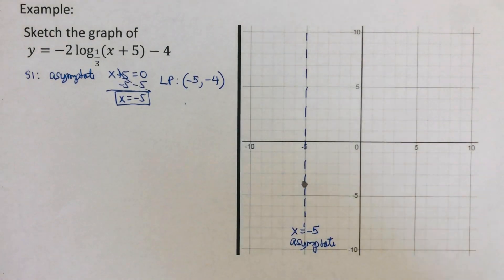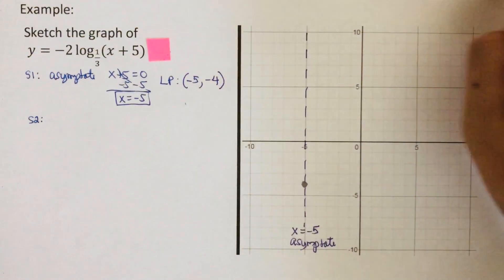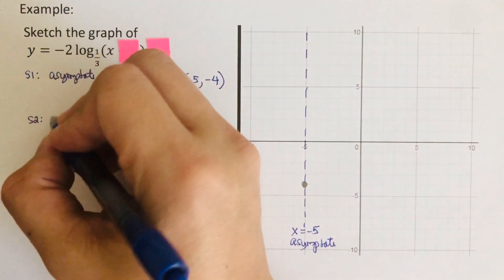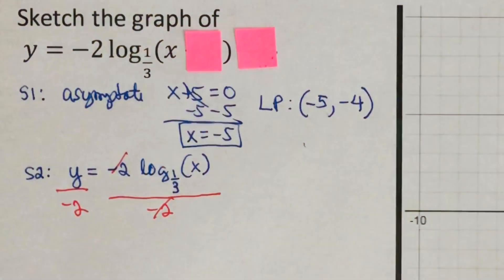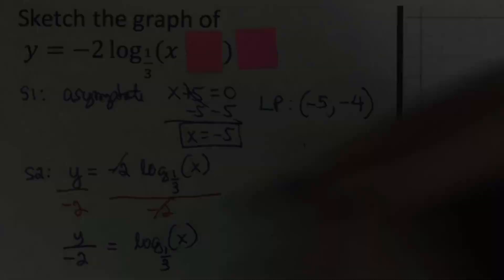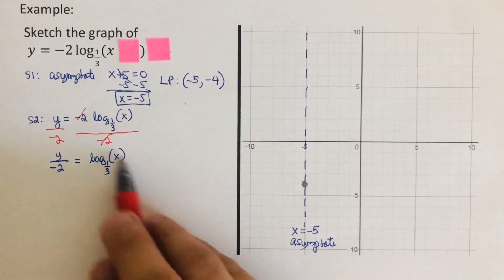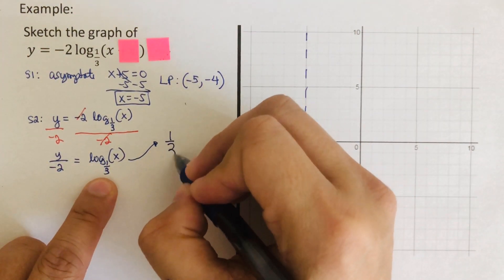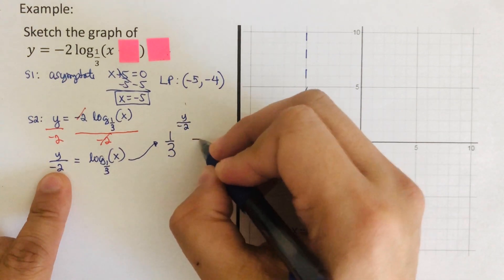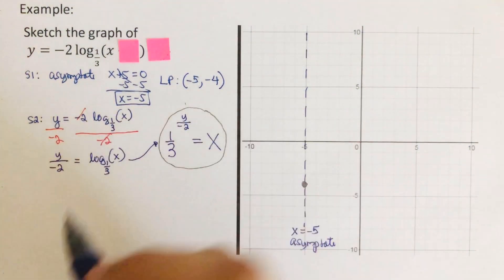We're ready to move on to the second step: determine the equation to set up the table. To determine the equation we cover the h and k — whatever is left over is the equation we use. Since we have a two in front of the log, we divide both sides by negative two, leaving y over negative two equals log of x to the base one third. We transform this into its exponential form: one third raised to the power y over negative two is equal to x.